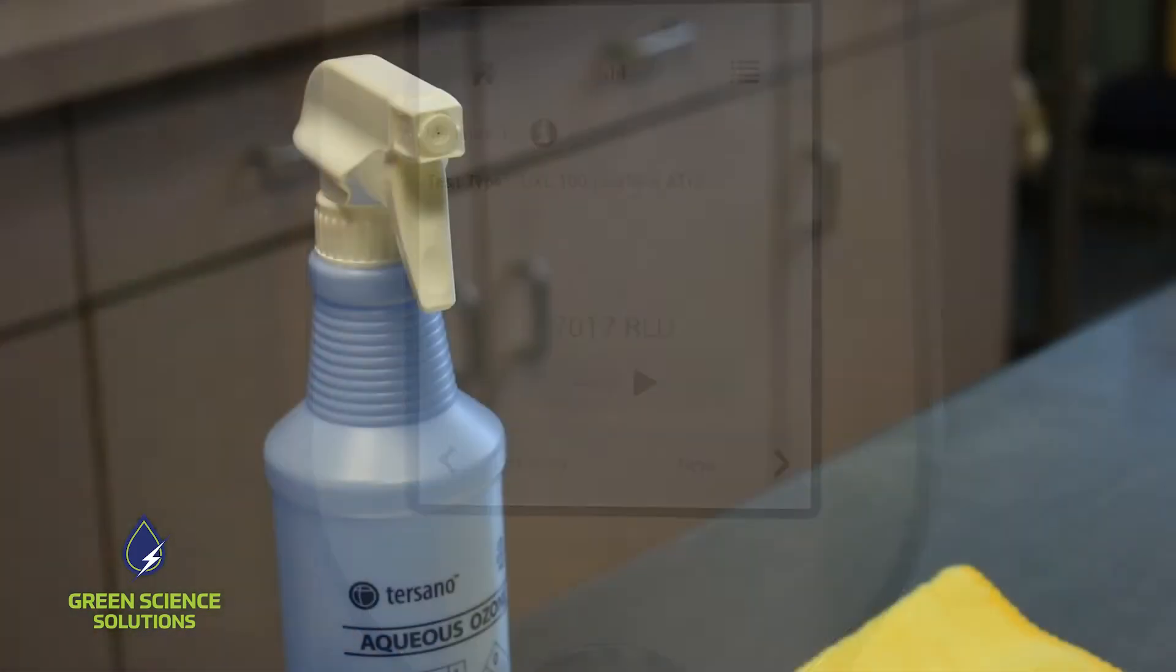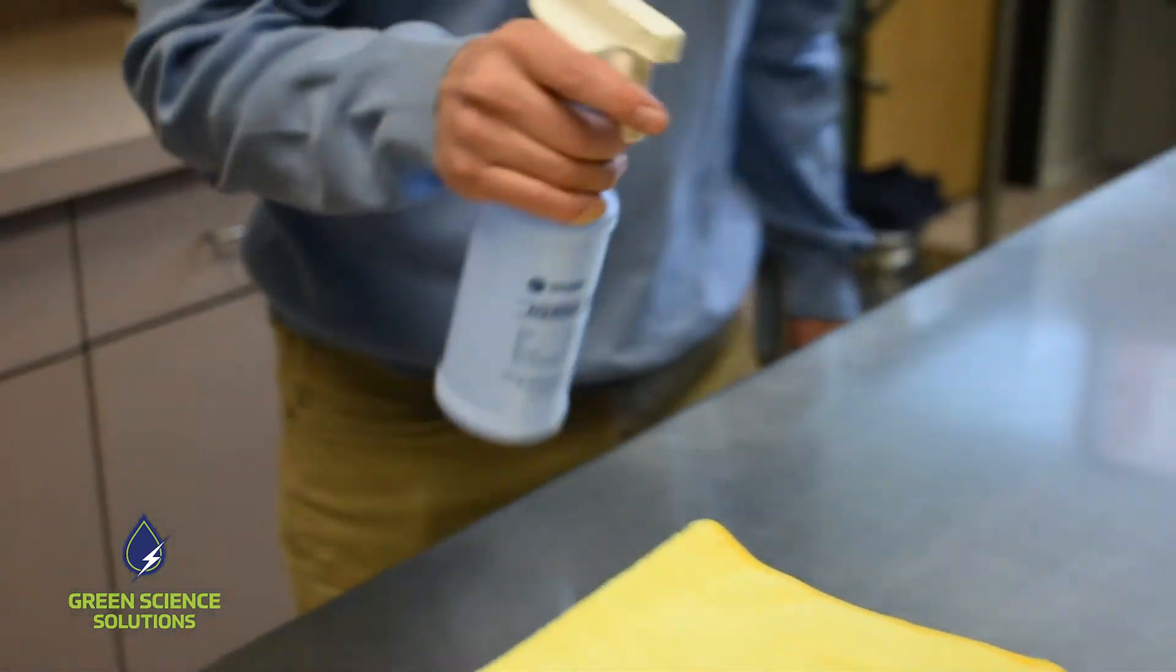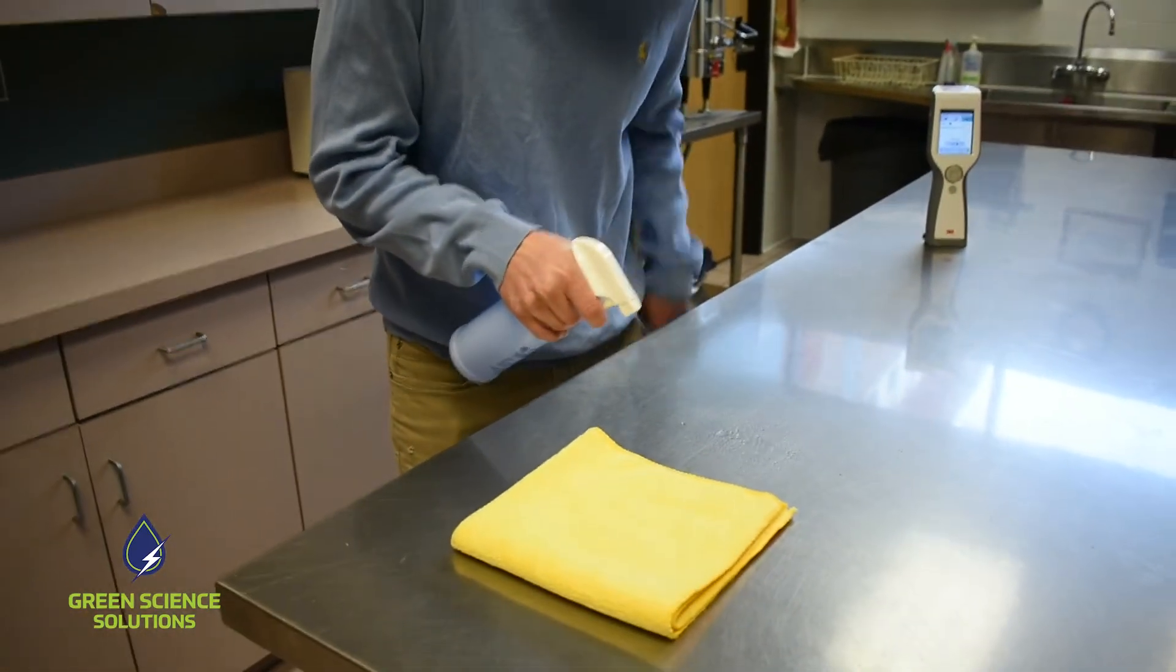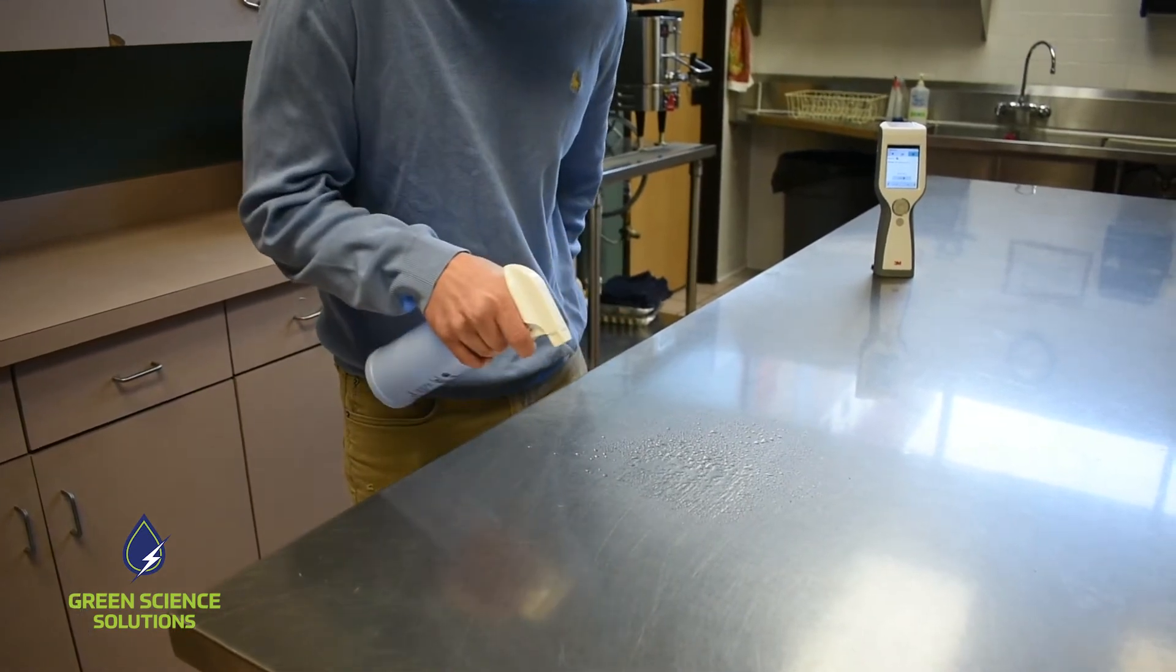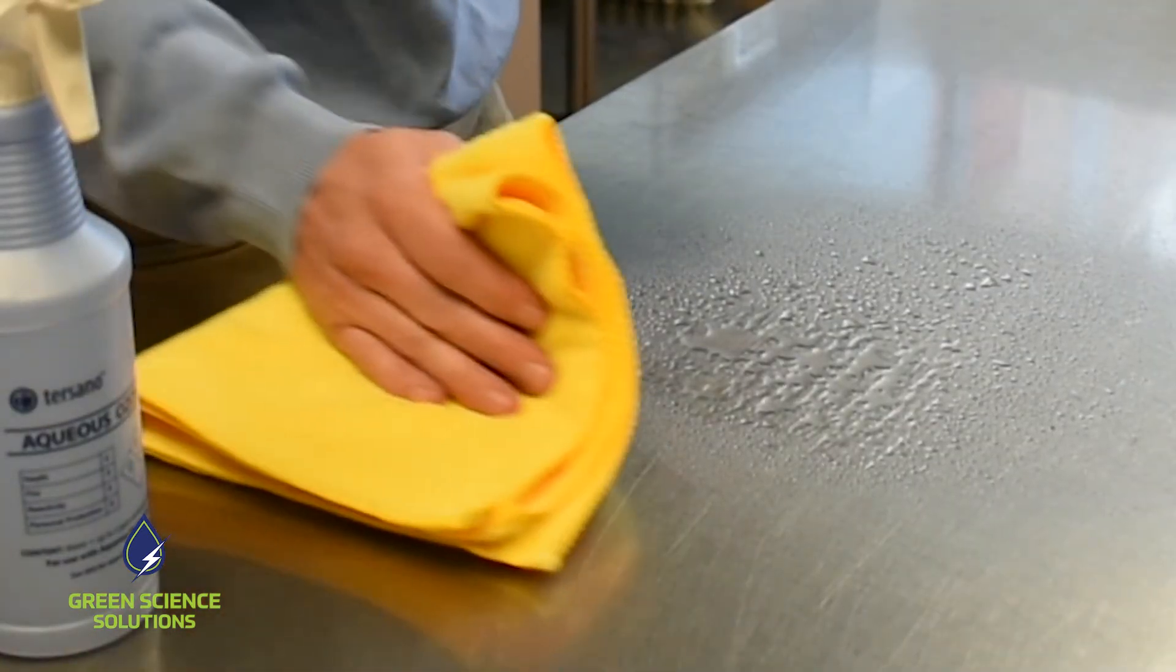Remember that number, because now we're going to repeat the process using SAO. First, we clean the area we just swabbed by spraying it with SAO. After we wait for one minute, we dry the area.